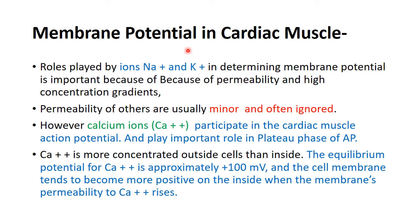As we know, membrane potential depends upon the permeability of ions. In cardiac muscle, it depends upon sodium and potassium ions, though it is more dependent on potassium. Permeability of other ions is minor and often ignored, but in cardiac muscle, calcium ions participate in the action potential and play an important role in producing the plateau phase.